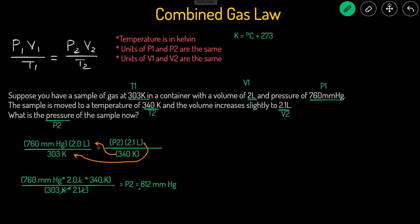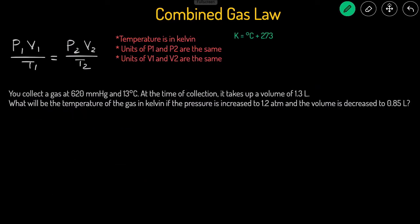Let's take a look at another example problem. This next problem reads, you collect the gas at 620 millimeters of mercury. Millimeters of mercury is a unit of pressure, so that would be pressure 1, and 13 degrees Celsius, temperature 1. At the time of collection, the gas took up a volume of 1.3 liters, and that's volume 1.